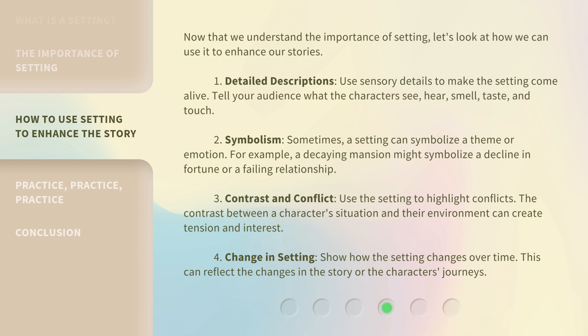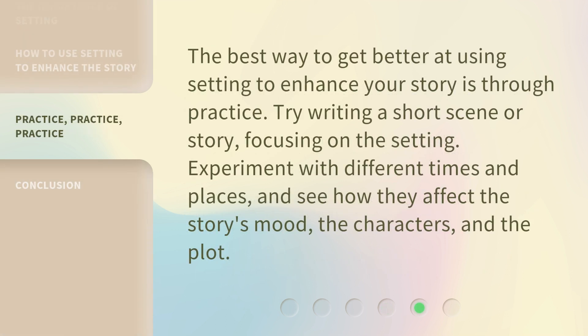Third, use contrast and conflict. Use the setting to highlight conflicts — the contrast between a character's situation and their environment can create tension and interest. Fourth, show a change in setting. Show how the setting changes over time, as this can reflect the changes in the story or the character's journeys. The best way to get better at using setting is through practice — try writing a short scene, focusing on the setting, experimenting with different times and places, and see how they affect the mood, the characters, and the plot.